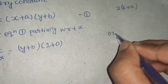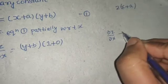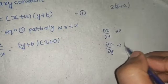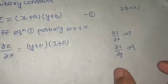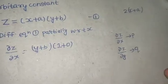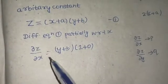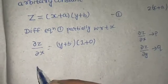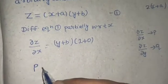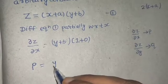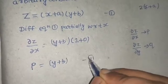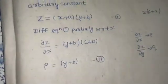You can replace del z by del x with p, and del z by del y with q — it depends on you. In some textbooks you see this written as p. So p equals y plus b, and this becomes your equation number two.